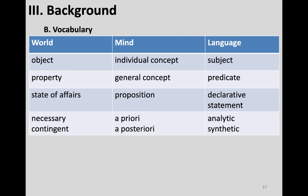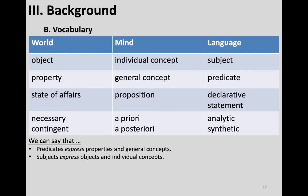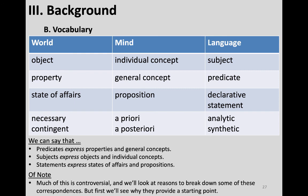To summarize: predicates express properties and general concepts; subjects express objects and individual concepts; statements express states of affairs and propositions. Much of this is controversial, and we'll look at reasons to break down some of these correspondences later. First, we'll explain why people think these things line up. We'll stop this segment here, and the next series of videos will talk about Frege, specifically his notion of sense and reference.